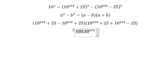100 is 10². And we know that 10² multiply with 10^624, you will get 2 + 624, equal to 10^626.